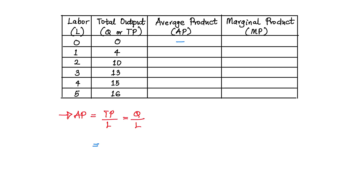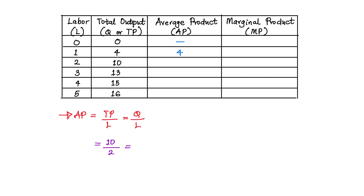Next, the total product is 4 and the level of labor is 1, so we have 4 divided by 1. The average product per worker equals 4. When the total product is 10 and the level of labor is 2, that is 10 divided by 2 equals 5. This means on average we expect each worker to give us an output of 5.